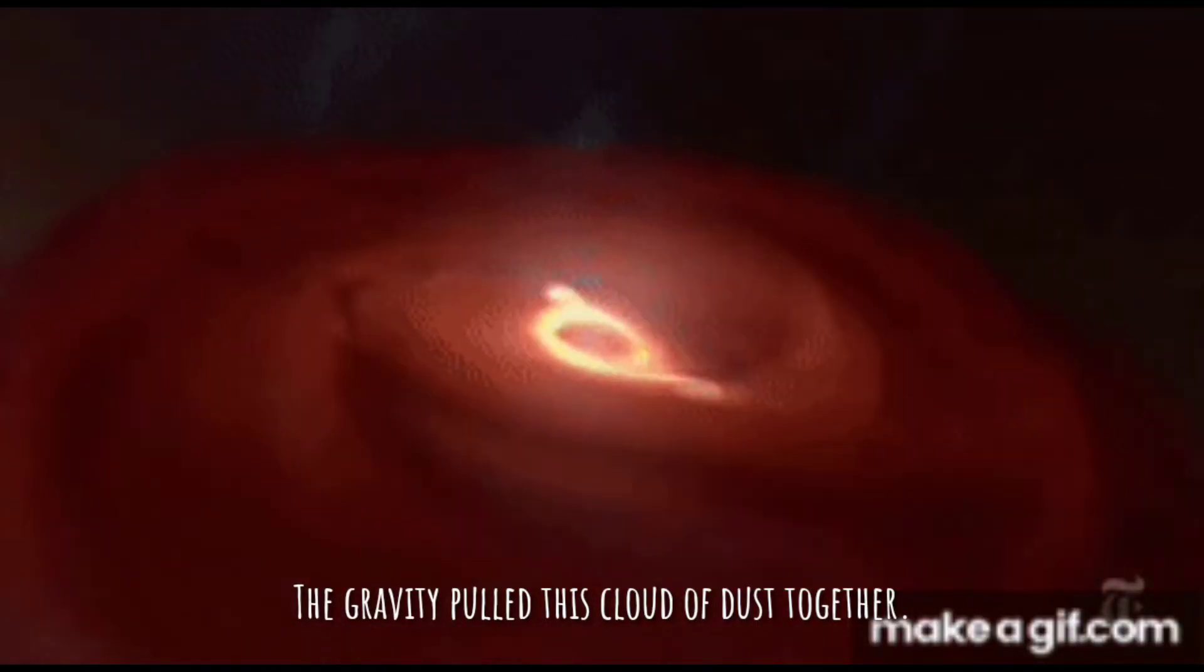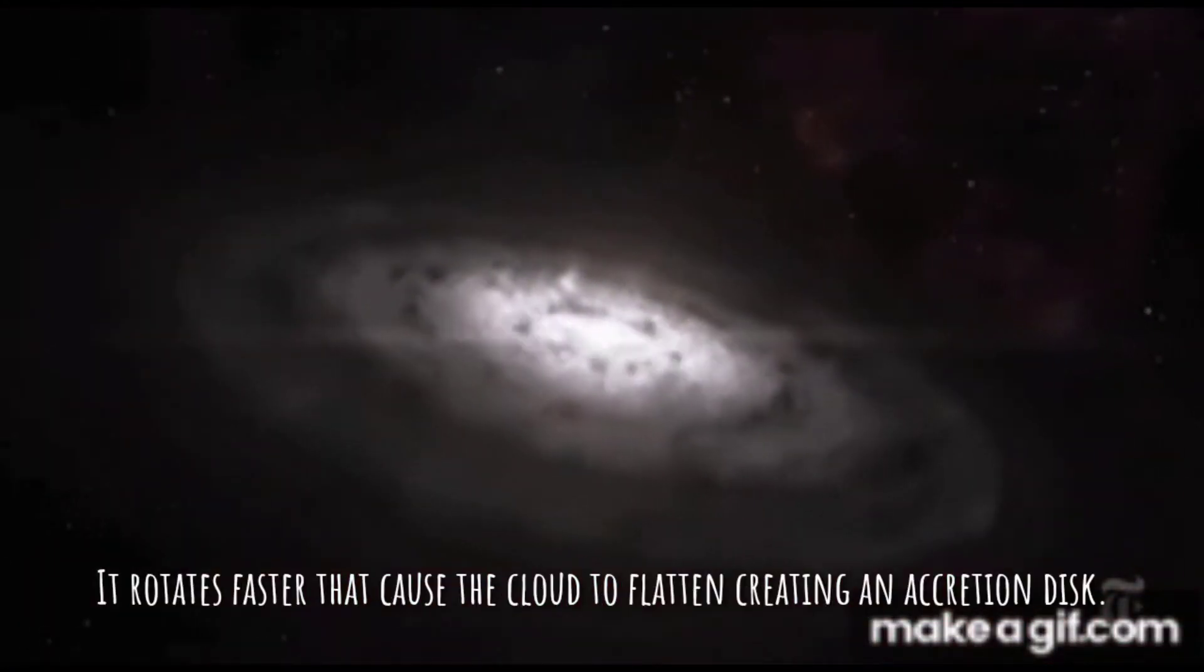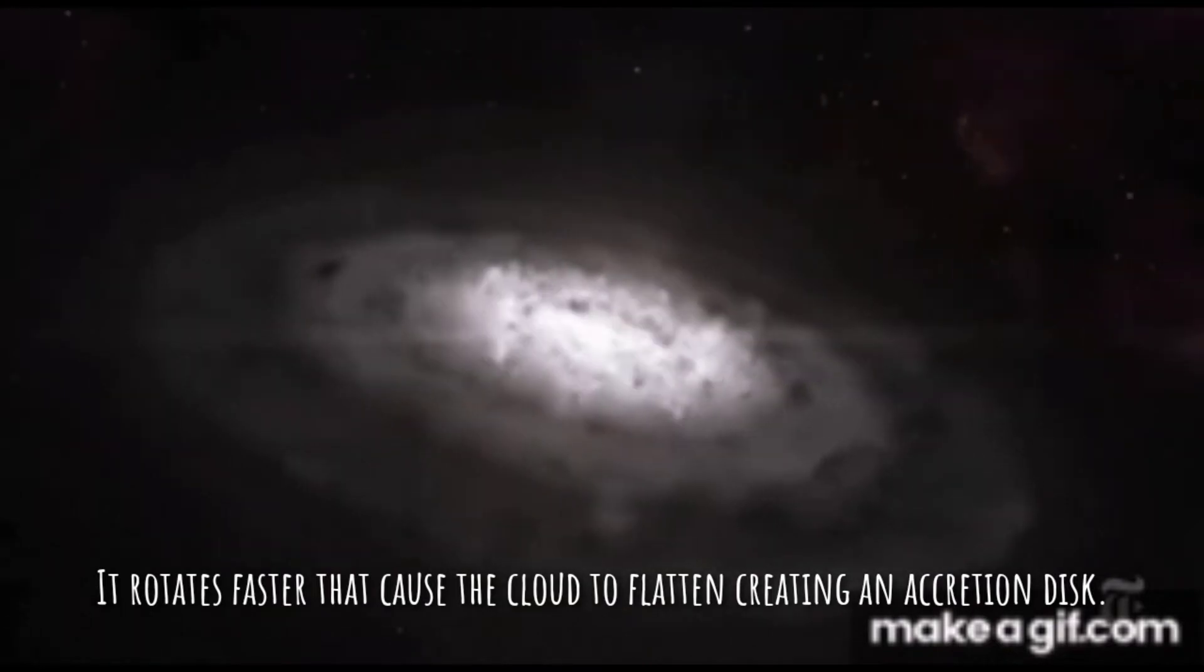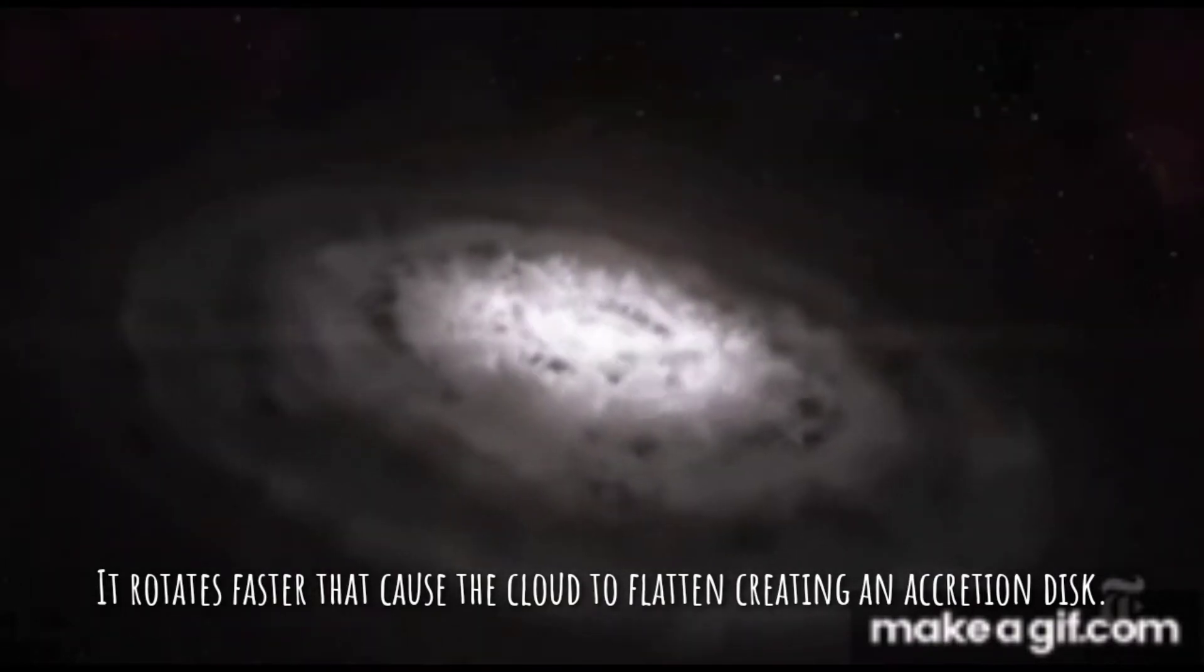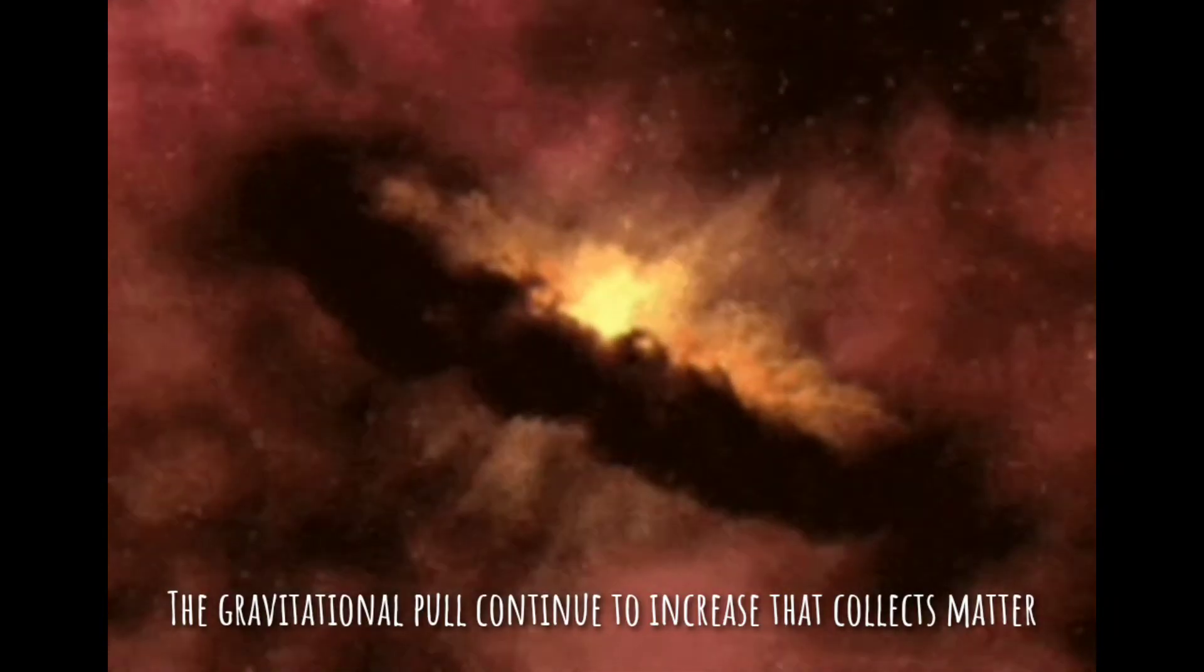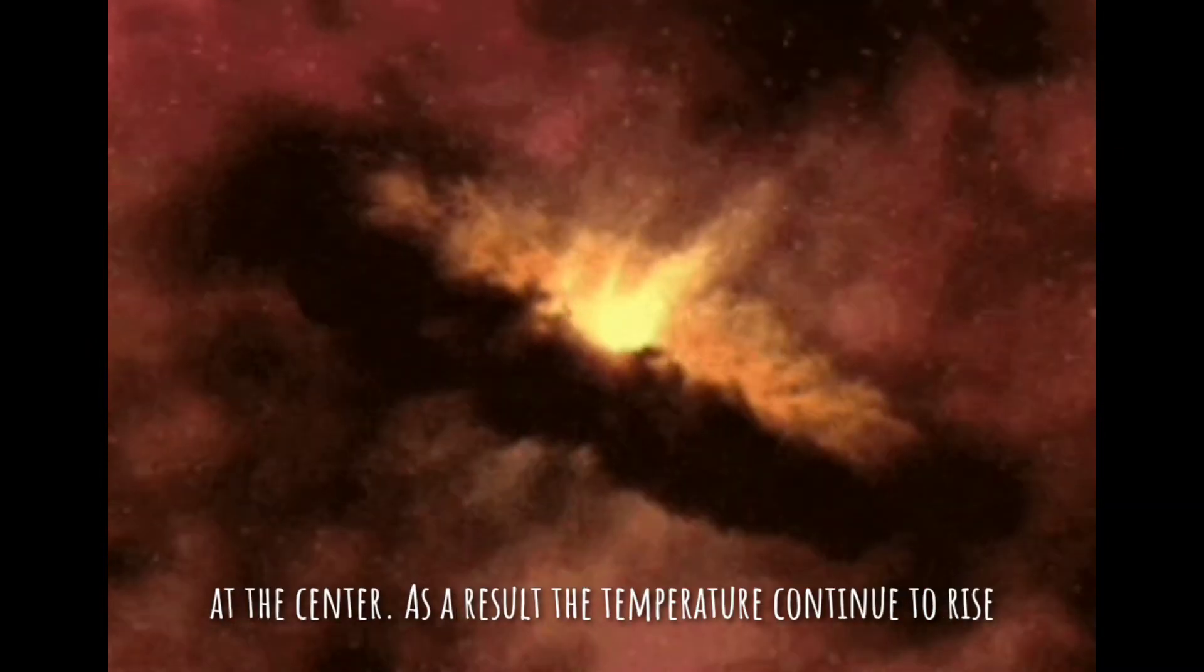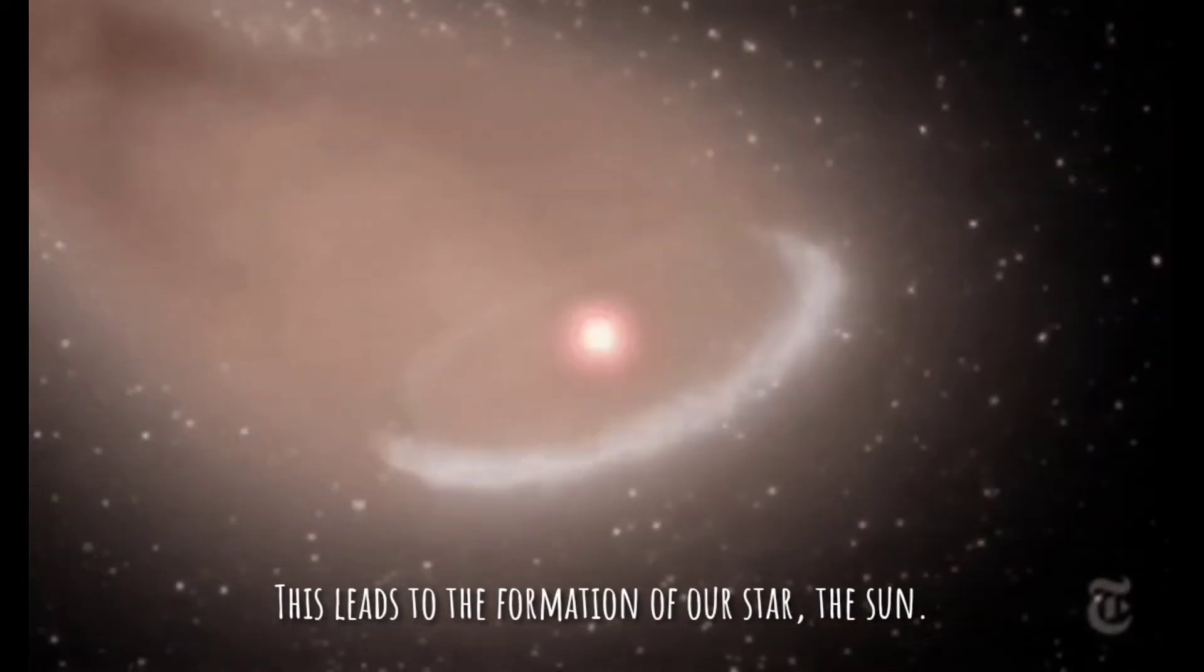The gravity pulls this cloud of dust together. It rotates faster, which causes the cloud to flatten, creating an accretion disk. The gravitational pull continues to increase, collecting matter at the center.